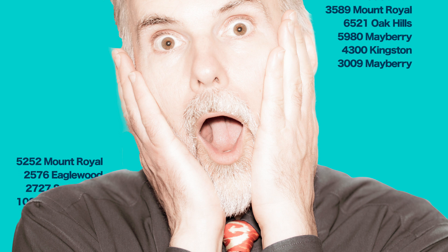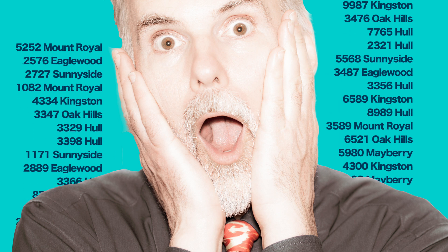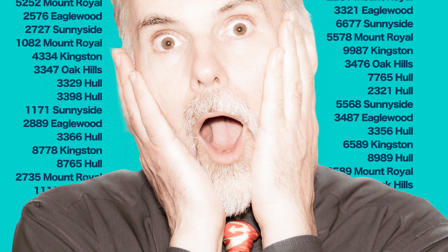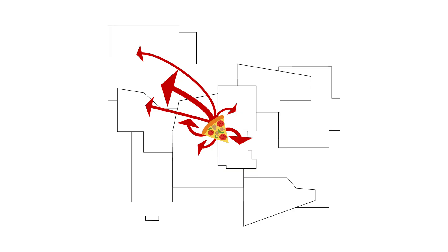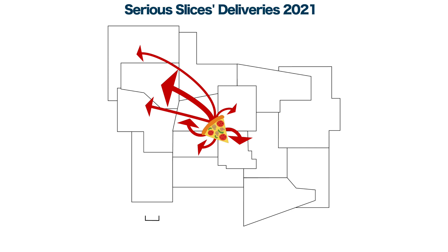To figure out the reason behind the fuel costs, you collected all of the addresses that Sirius Slices delivered to in the past 12 months. Then you made a flow map with the size of arrows representing the frequency in which Sirius Slices made a delivery to the city's different neighborhoods. At the top of the flow map, you included the title. The data source could be found at the bottom, along with the scale of the map.